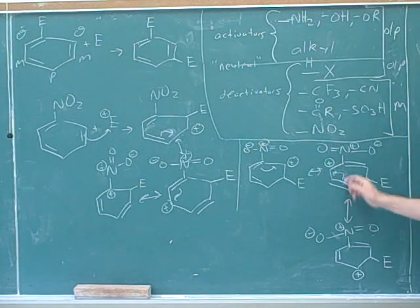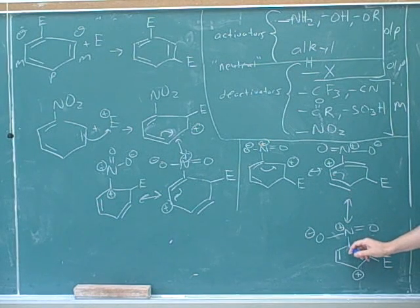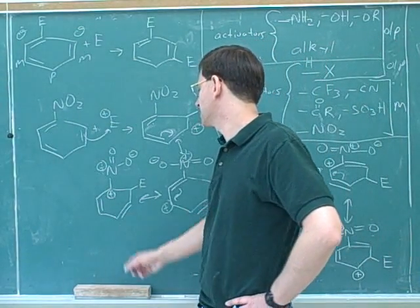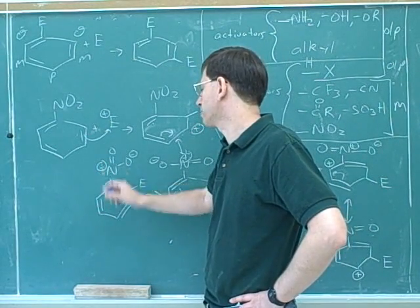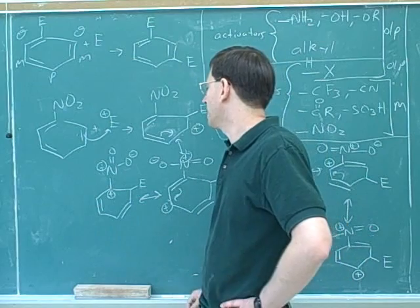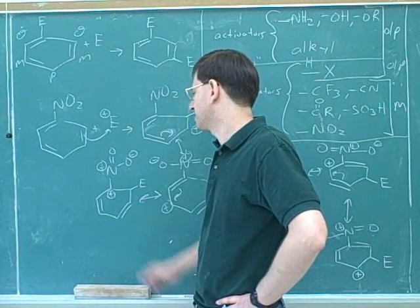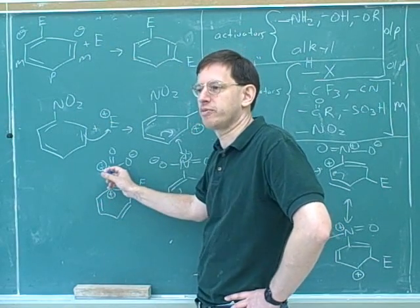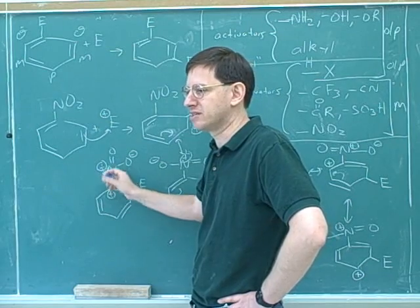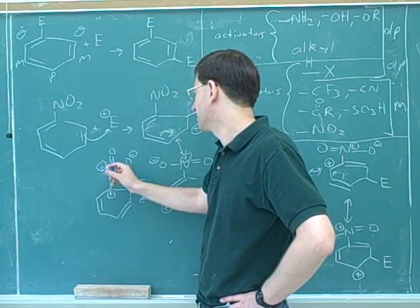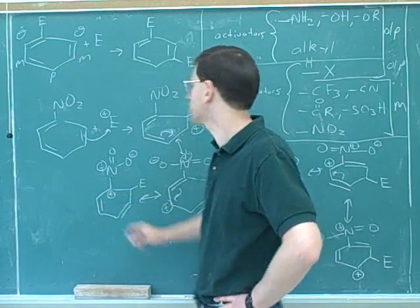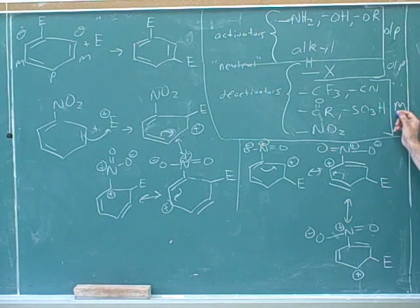Deactivators prefer resonance structures where the positive charge is never right next to the substituent, so they prefer the meta attack. They don't like the ortho and para attack because that gives a terrible resonance structure where the electron-withdrawing substituent is next to the positive charge. You want to keep the positive charge as far away as possible from the electron-withdrawing substituent, because electron withdrawers destabilize positive charges. So that explains why all deactivators are meta-directors.